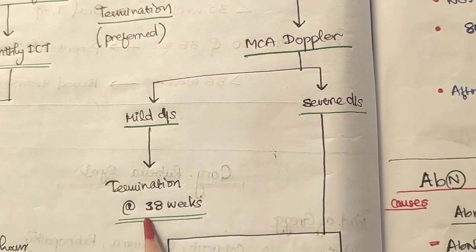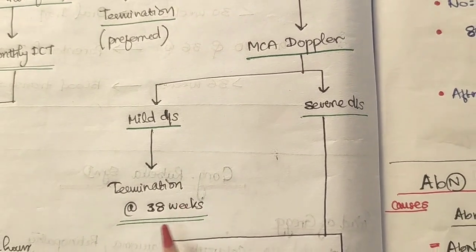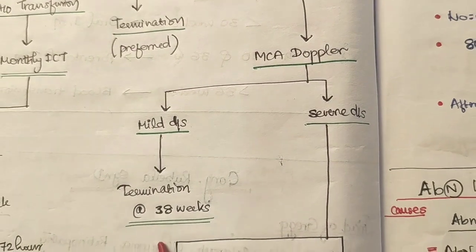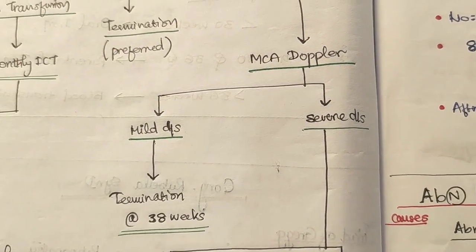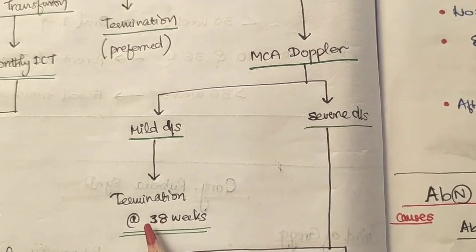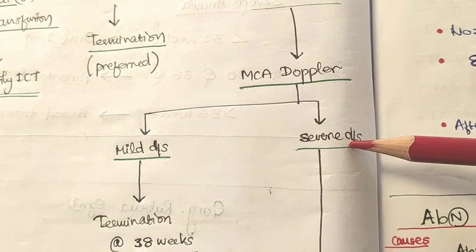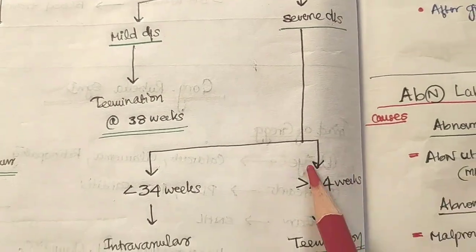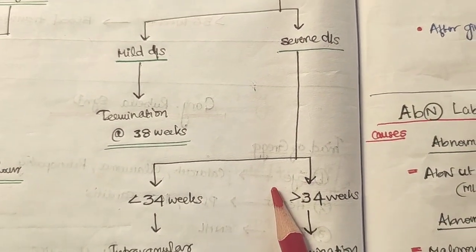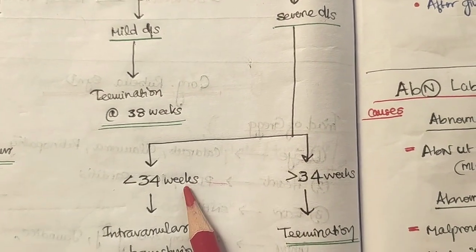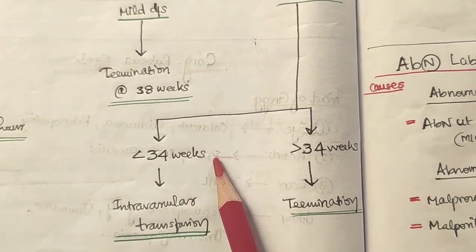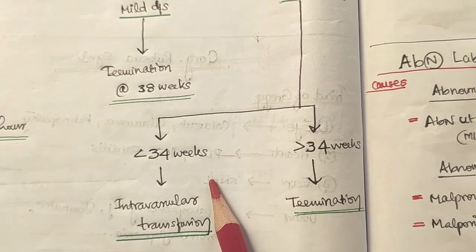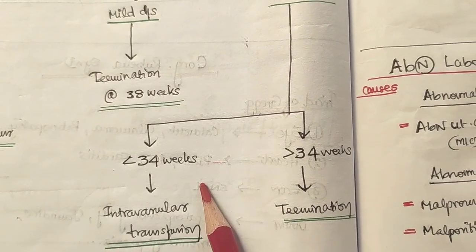If the MCA Doppler findings suggest mild disease, we can continue the pregnancy and plan termination at 38 weeks. If findings suggest severe disease, we must accurately assess the gestational age. If the gestational age is less than 34 weeks, we must try to continue the pregnancy.